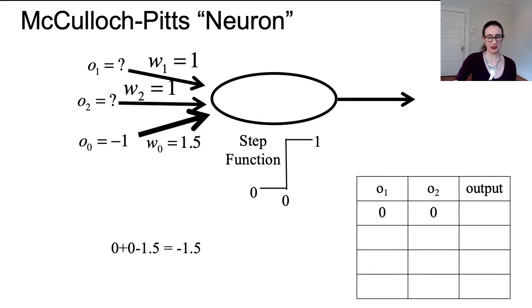What if O_1 and O_2 are both 0? In that case I compute 0 times 1 plus 0 times 1 from the two neurons at the top and then a negative 1 times 1.5. That total is negative. That doesn't surpass 0 which is the threshold and so the output is 0. The neuron does not spike.